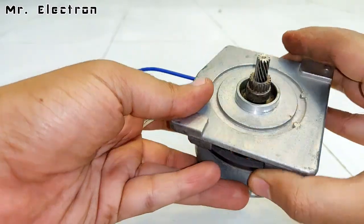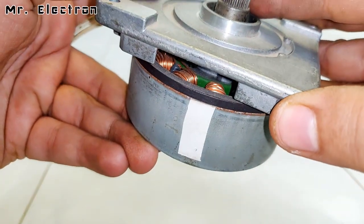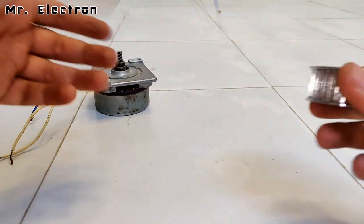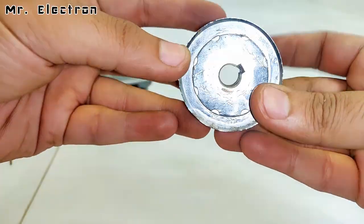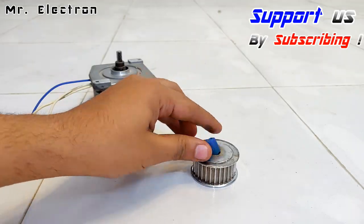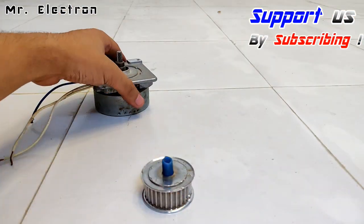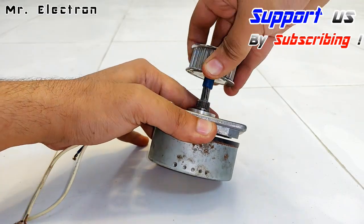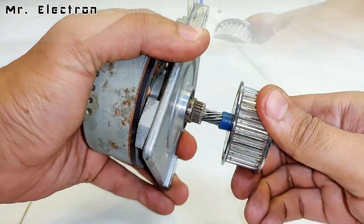Hi guys, you are watching channel Mr. Electron. This is a BLDC motor from an old Xerox photocopier machine, and this is a 10mm pulley. But it is not fitting the shaft of the BLDC motor, so I'm using this rubber sleeve to place it firmly inside like this.